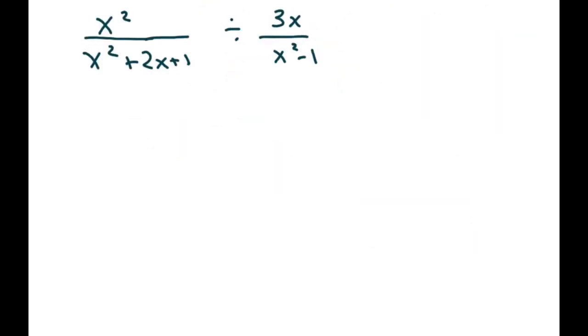Alright, the next one is this one. This is also a perfect square trinomial. It means I can write this as x squared over, this is going to be x plus 1, because x is your a, and 1 is your b, and that's 2 times 1, so squared.